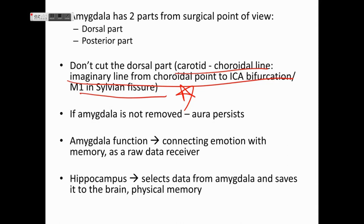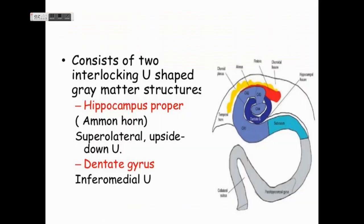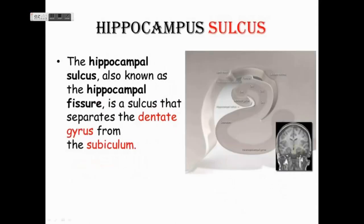The hippocampus has two interlocking U-shaped grey matter structures: the hippocampus proper or Ammon's horn, which is superolateral, and the dentate gyrus, which is the inferomedial U. The hippocampus proper has parts CA1, CA2, CA3, CA4, and the subiculum, with the parahippocampal gyrus visible adjacent to it. The hippocampal sulcus — also known as the hippocampal fissure — separates the dentate gyrus from the subiculum.